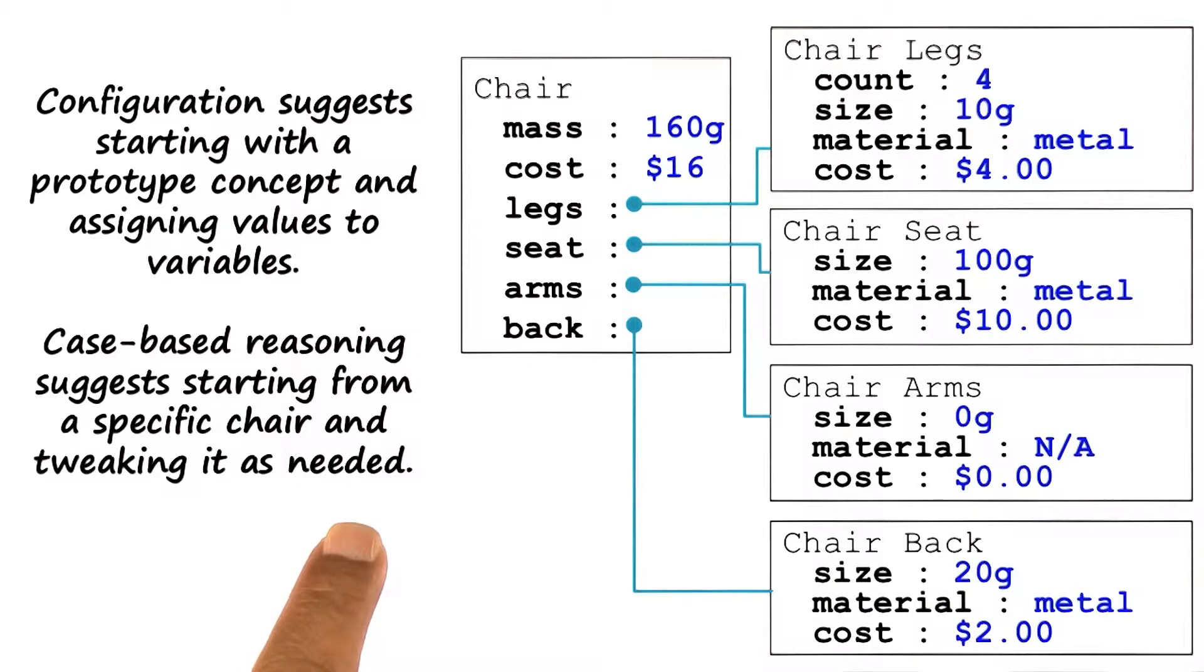And tweak it as needed to satisfy these constraints or the current problem. Case-based reasoning assumes that we already designed a lot of chairs, and we have stored examples of the chairs we have designed in the memory.